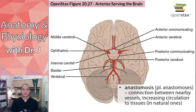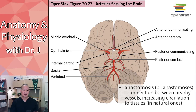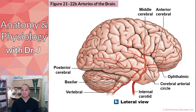The Circle of Willis features anastomoses — natural connections between nearby blood vessels. Most vessels just branch; they don't loop or fuse. But here, structures like the anterior communicating arteries form bridges between the left and right subsets of vessels supplying the brain. This creates backup routes: if one vessel is blocked by a clot or damage, alternate routes maintain blood perfusion to that area.